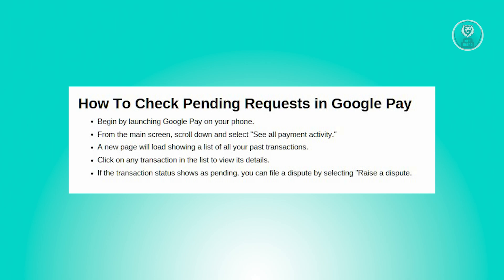Once you're on the Google Pay homepage, scroll down through the page until you find the option labeled 'See all payment activity.' Tap on this option to proceed to the next screen.